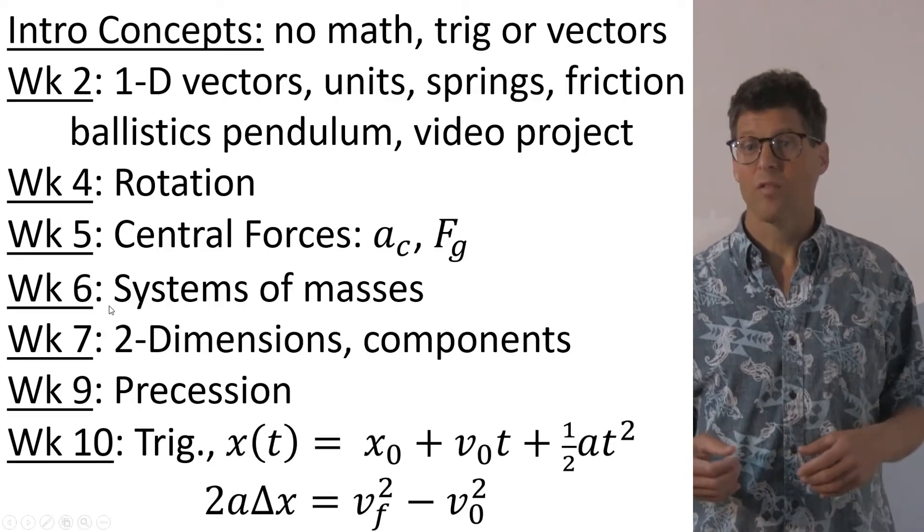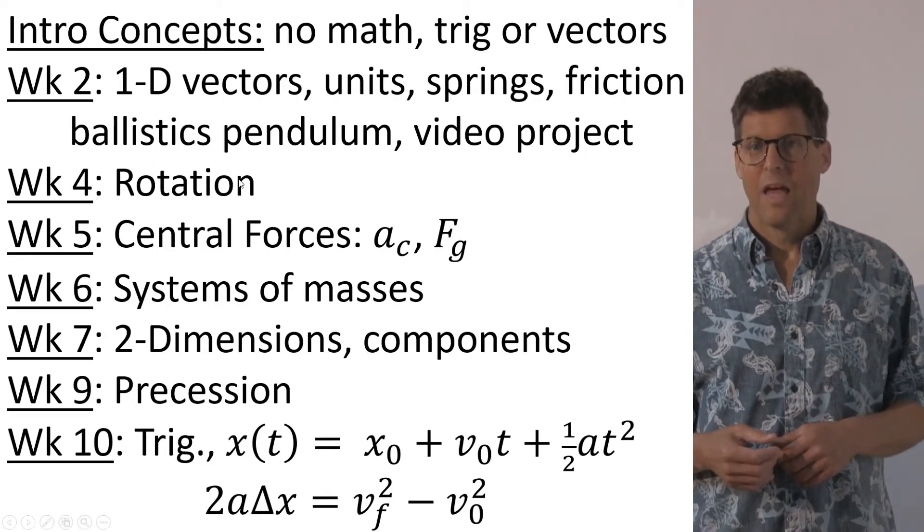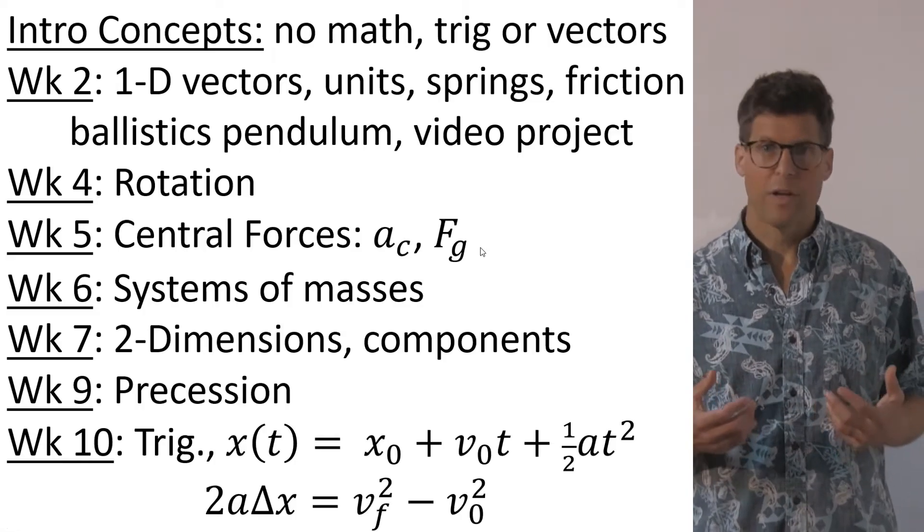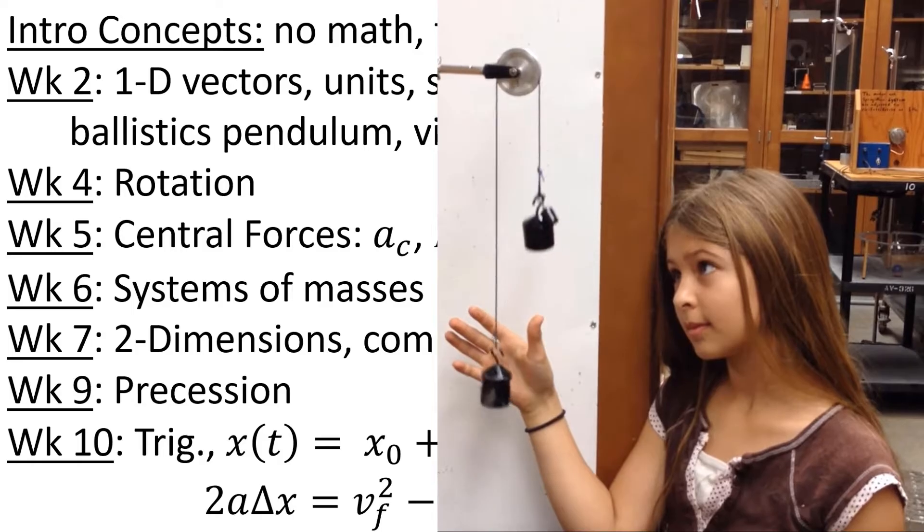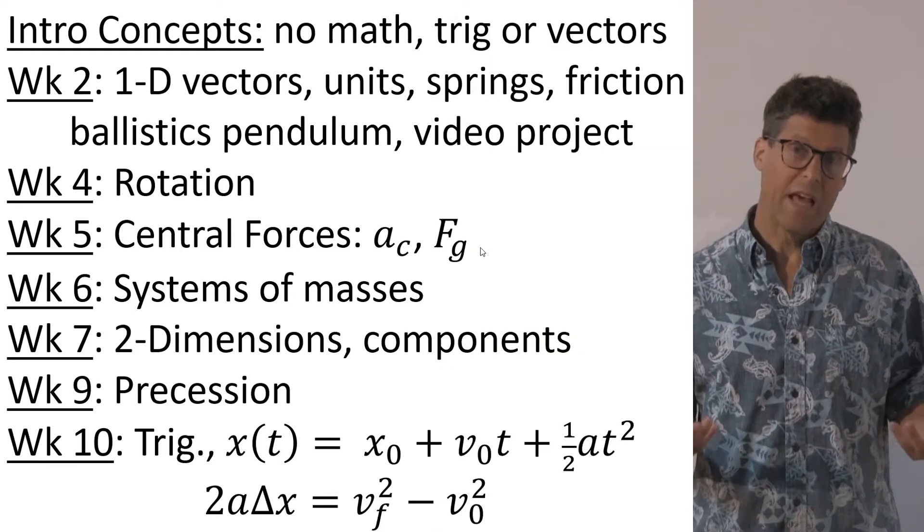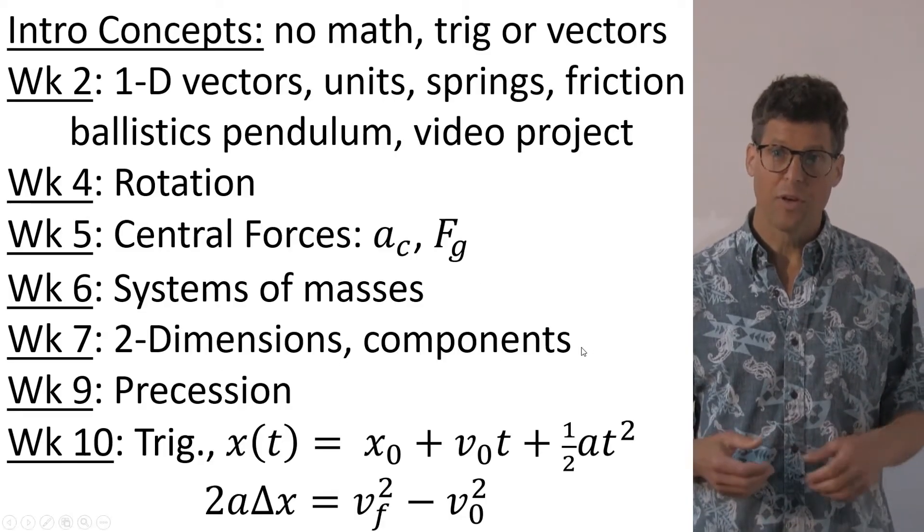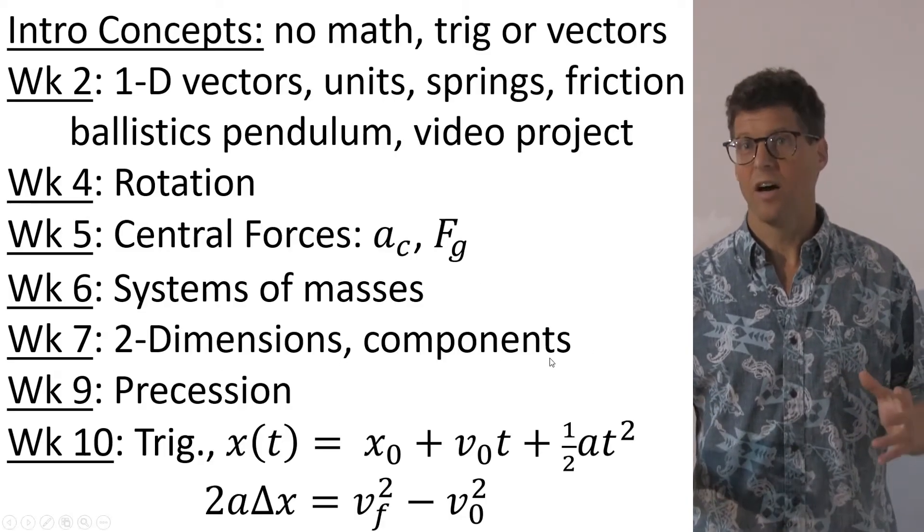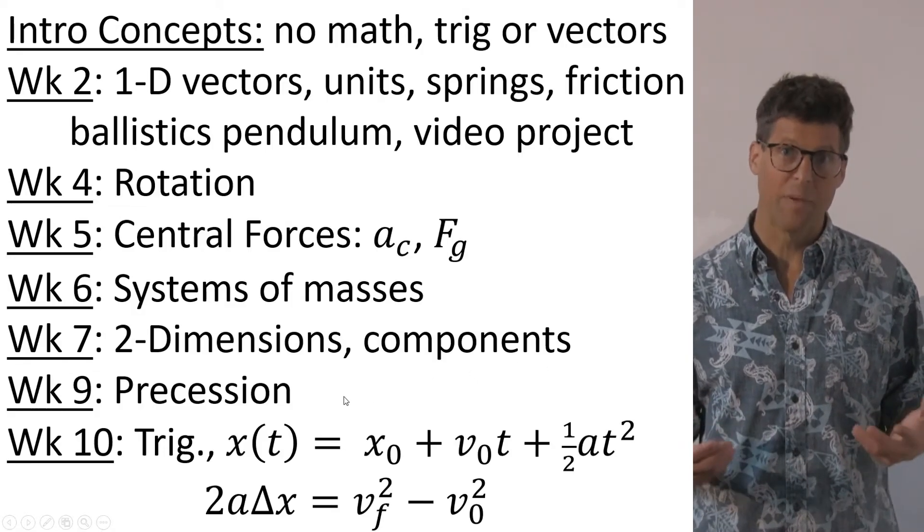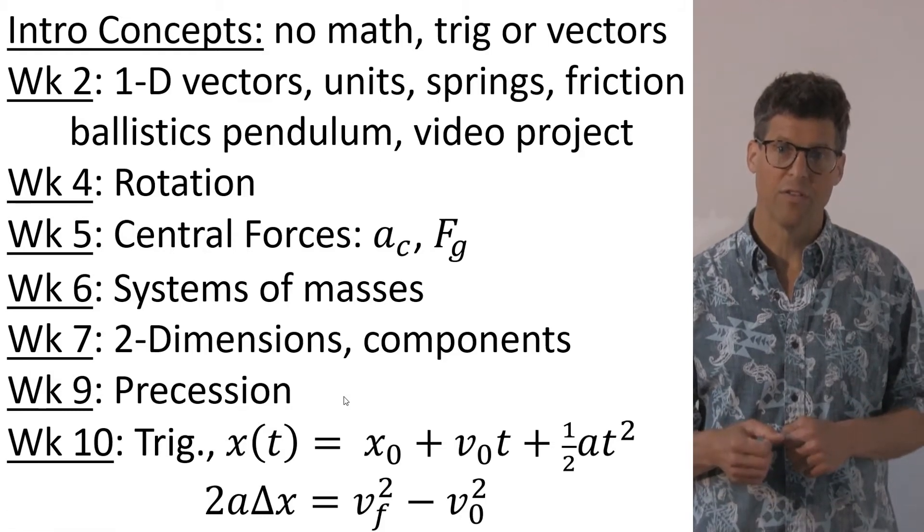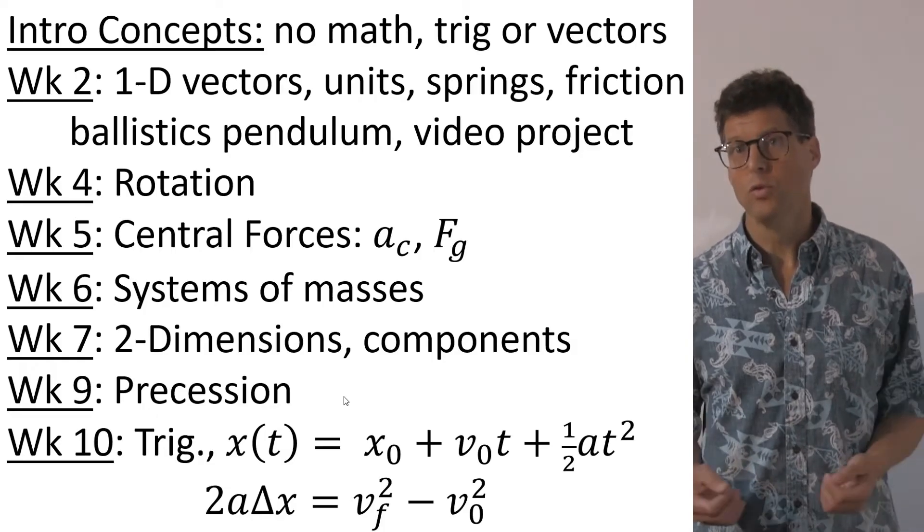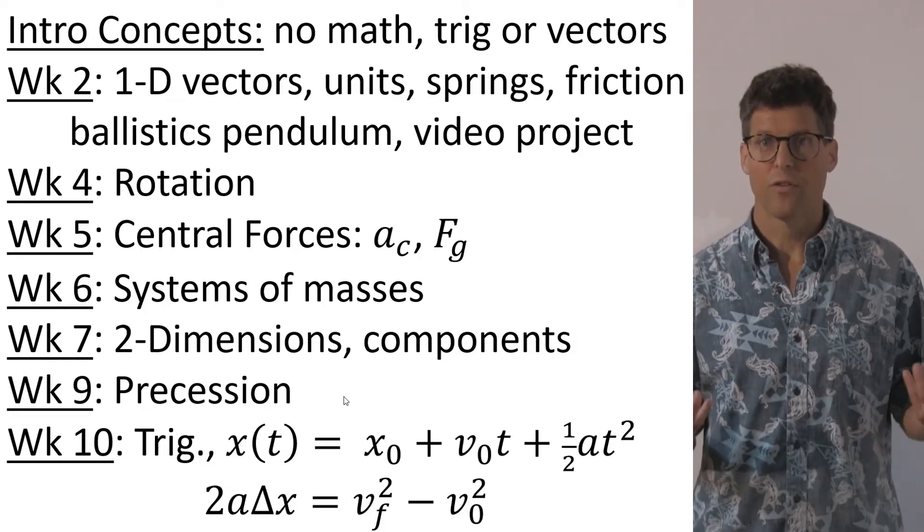And so after this, we repeat the same process, but with rotation. And in week five, we look at central forces, including centripetal acceleration and universal gravity. In six, we can look at systems of masses. In week seven and eight, we repeat the analysis again, but for two dimensions, but without trigonometry. So students get an idea of how to visually estimate components. In week nine, we look at more advanced topics like precession and gyroscopic stabilization. And in week 10, we draw it all together and allow students to use trigonometry and to use these larger kinematic formulas.